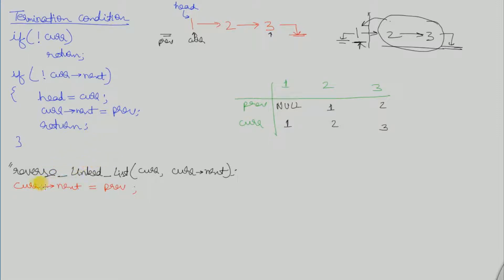Otherwise, if there are elements in the linked list and the current node is not the last node, we will reverse the rest of the elements to the right by passing the current node as the previous node for the next call, along with current.next. When this function returns, we make the next pointer of the current node point to its previous pointer.